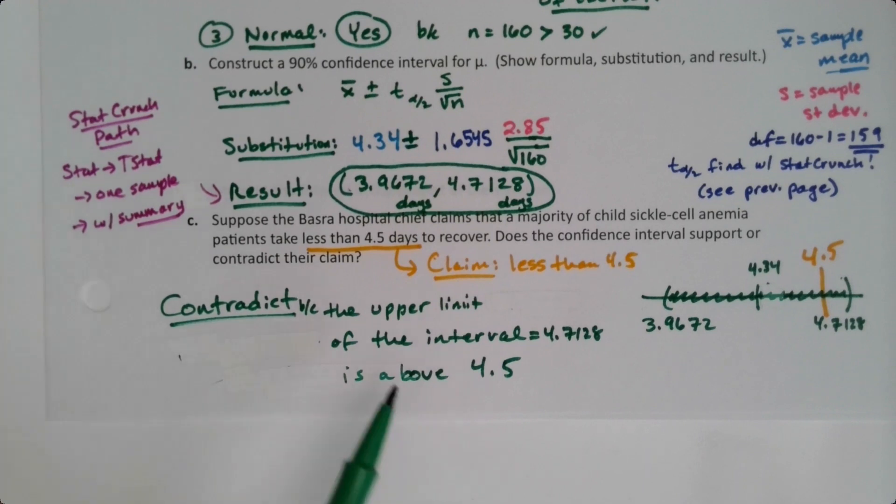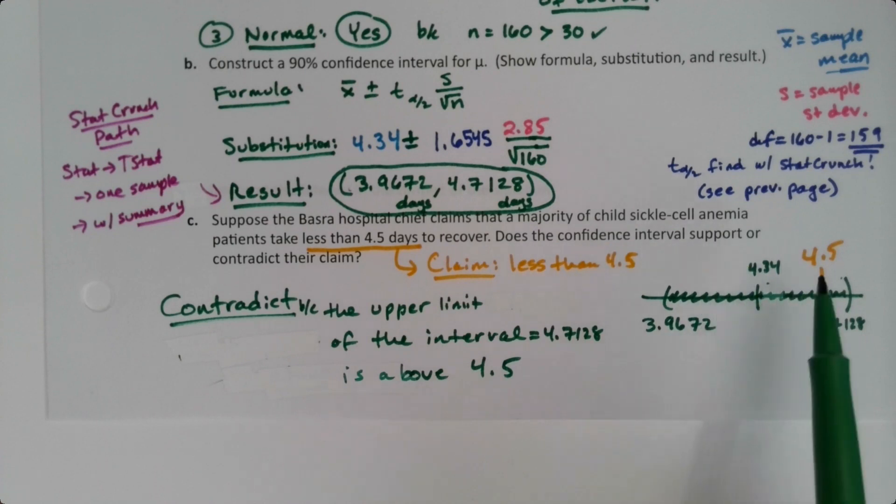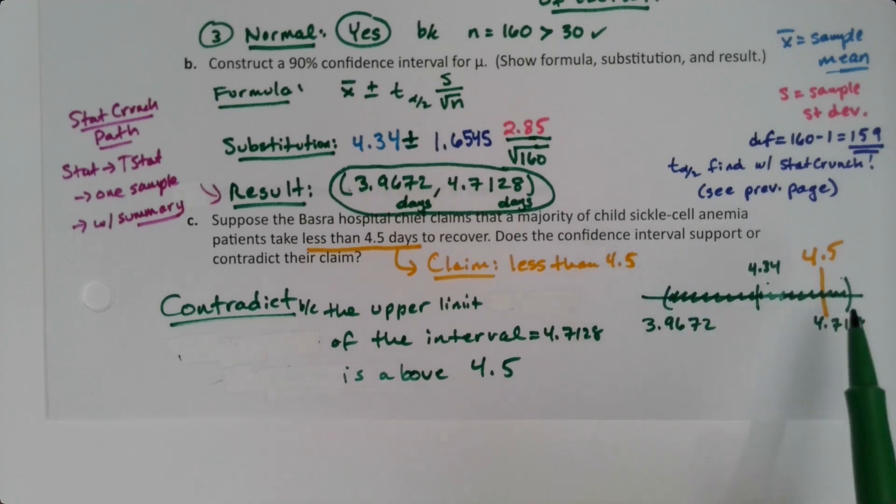And I said this when we ran into this before in section 9-1. You need your entire interval to be where they're claiming to support, right? Supporting is actually kind of tricky. To support, your whole interval has to be where they say. But your whole interval isn't where they say. A lot of your interval is where they say, but not all of it. There's this bit over here on the top that's higher than 4.5. So that's a contradict.